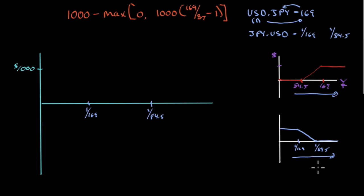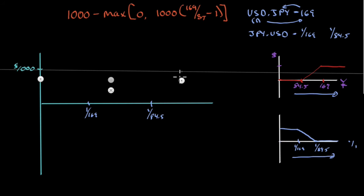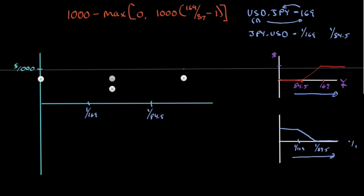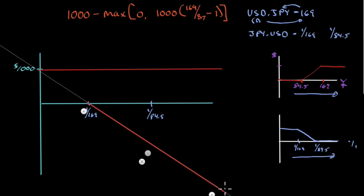I've flipped it so 1/169 is the left breakpoint and 1/84.5 is the right breakpoint. Rather than the yen getting weaker, the yen is getting stronger moving right. Starting from nearly zero dollars per yen out to something like 1/1, where yen is on par with the dollar. I've just turned it around, and now you'll see how easy it becomes to solve this.